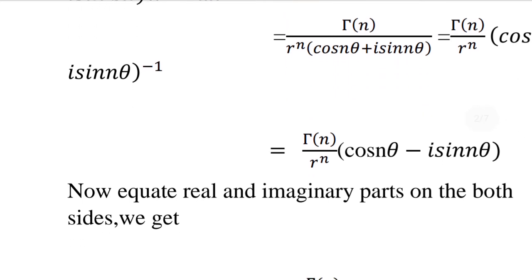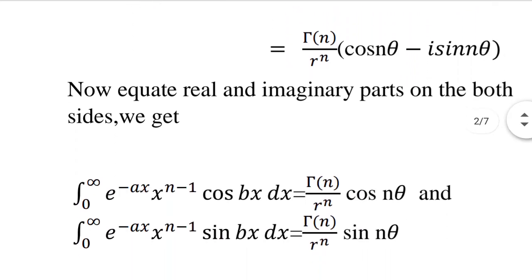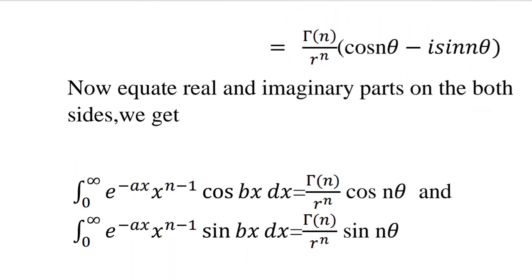Equating real and imaginary parts on both sides, we get: integral from 0 to infinity of e raised to minus ax times x raised to n minus 1 times cos bx dx equals gamma n by r raised to n times cos n theta, and integral from 0 to infinity of e raised to minus ax times x raised to n minus 1 times sin bx dx equals gamma n by r raised to n times sin n theta.